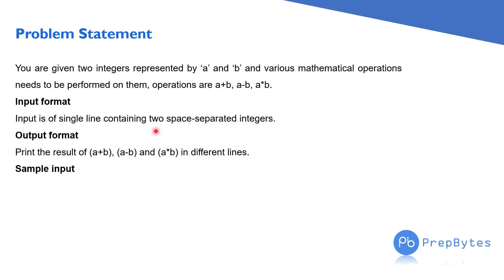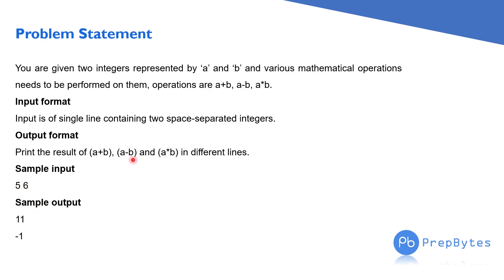For example, the sample input is five and six — two space-separated integers. The value of a is five and the value of b is six. The sample output is 11 (that is 5 plus 6), minus 1 (that is 5 minus 6), and 30 (that is 5 into 6). As specified in the output format, they are printed in different lines.